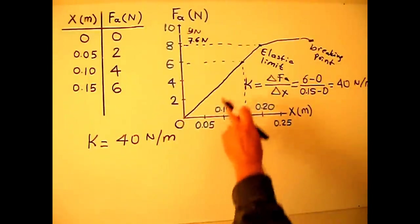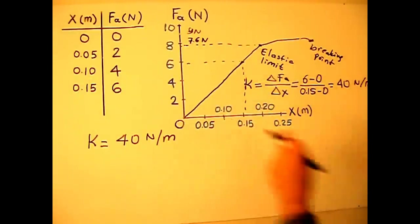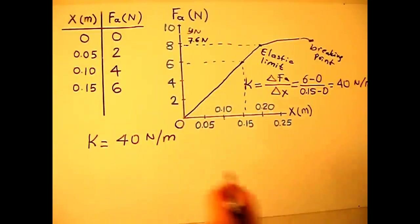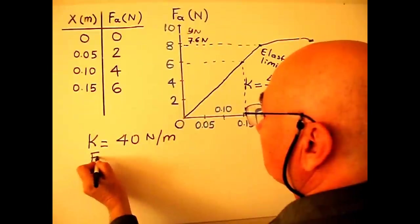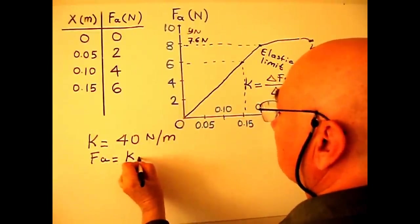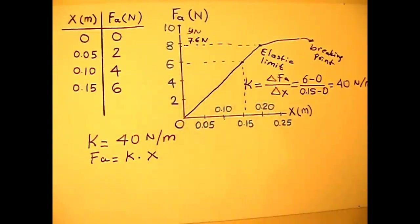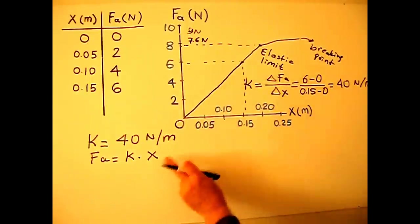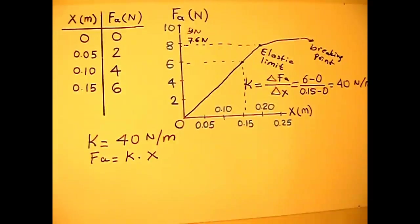When we look at this line, we can write this formula. FA equals k times x. When we look at this graph or this equation, we can see FA is directly proportional to x. This relation is called Hooke's Law. Any spring that obeys Hooke's Law is called an ideal spring.